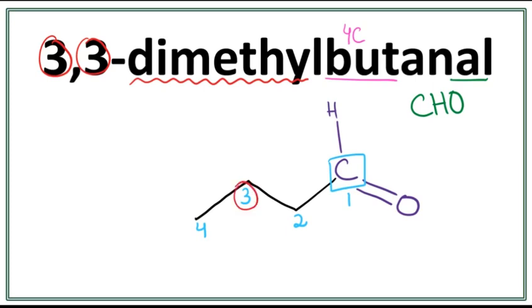Let's get rid of these numbers and let's attach the two methyl groups on the third carbon. This is the structure for 3,3-dimethyl butanal.